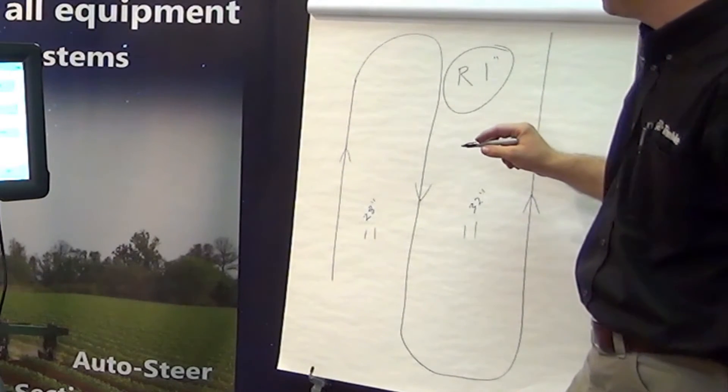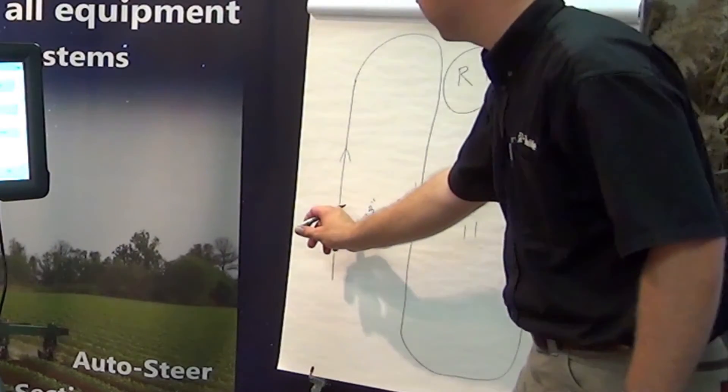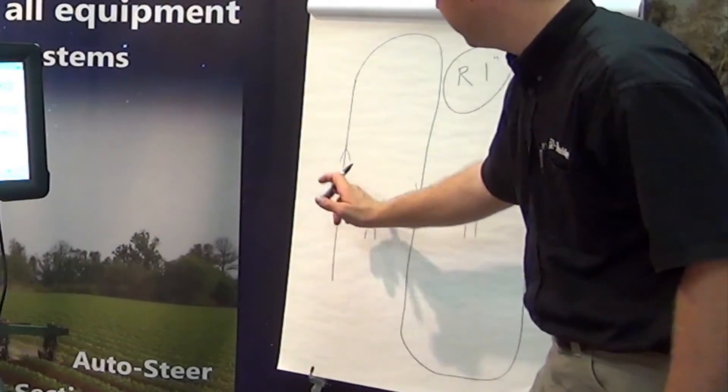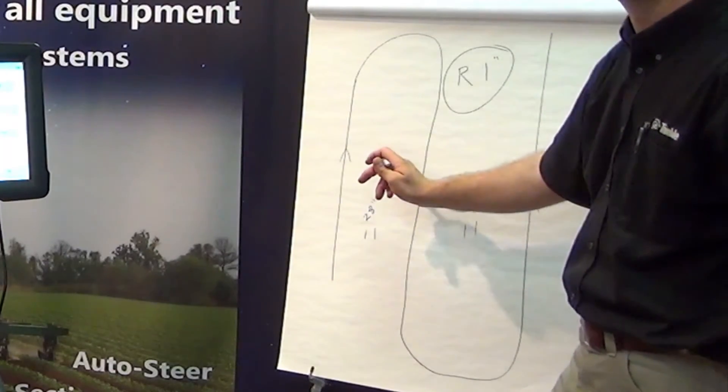How we're going to determine that is if we think about it, in this case when we were traveling this direction, our implement was trailing to the right one inch too far.